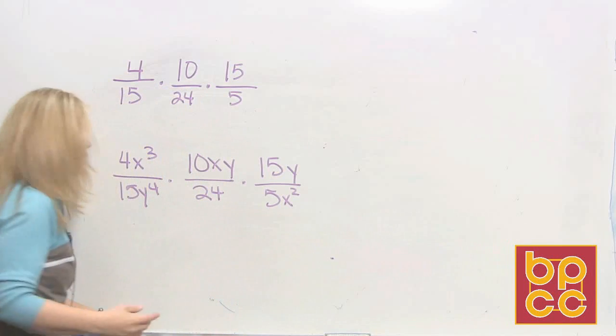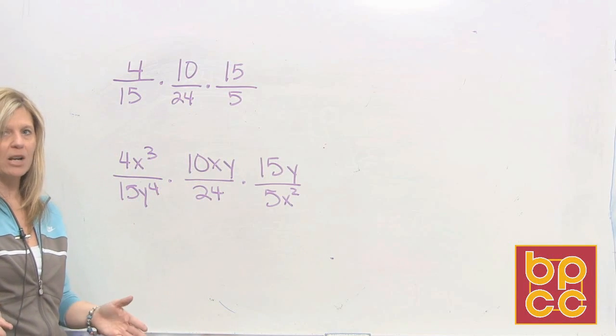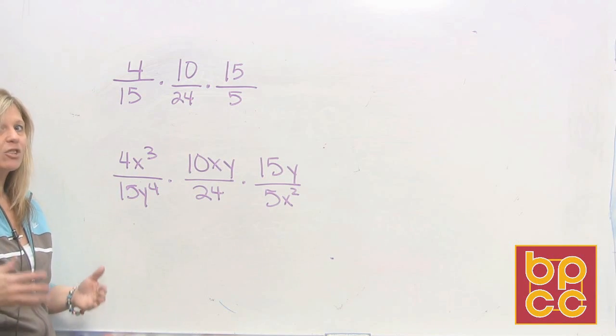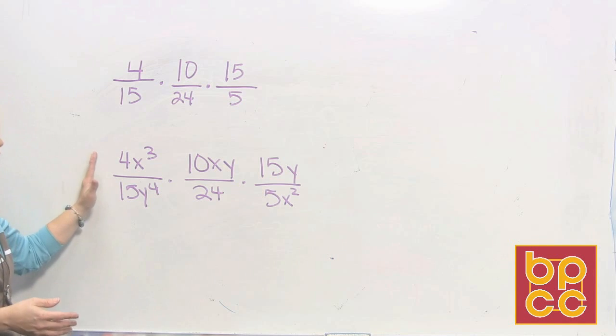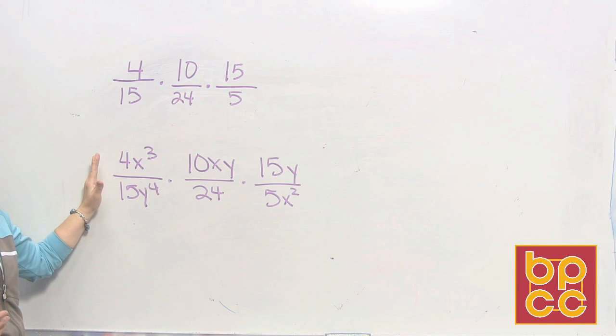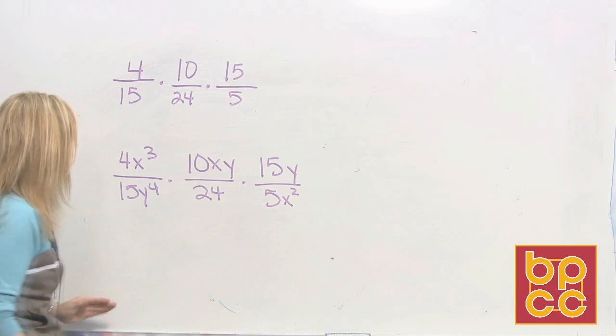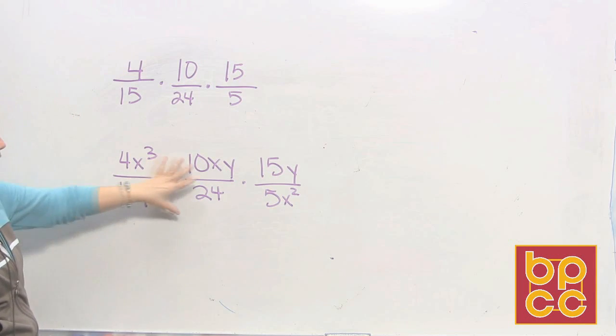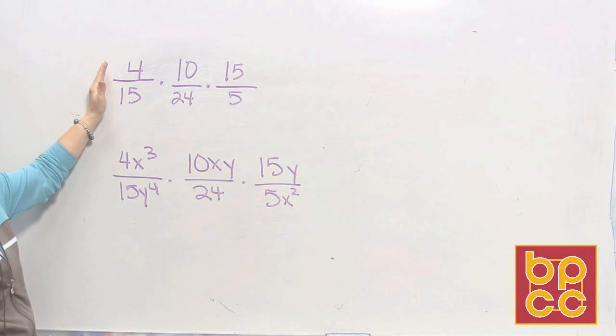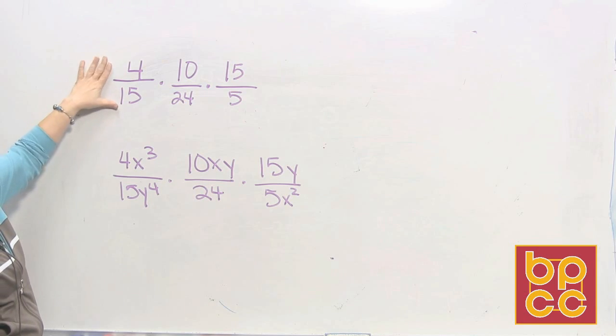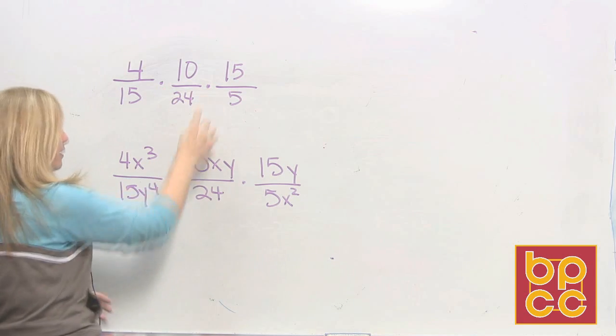The easiest way to understand how to multiply rational expressions in Algebra is to go back to arithmetic. So this is our first example in our class notes. It's Algebra, these are rational expressions, fractions. Before we do this, let's take out the variables and just look at the numbers. Let's go back to fifth and sixth grade math.